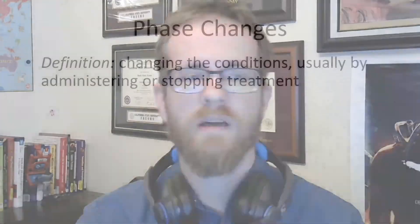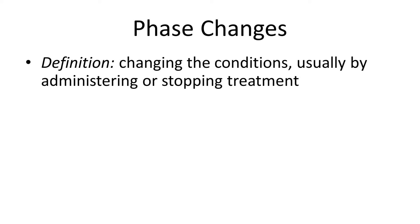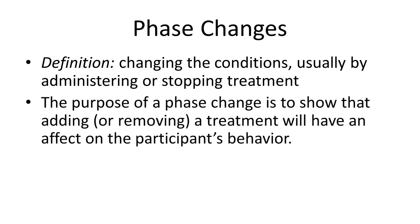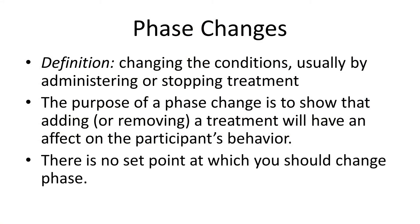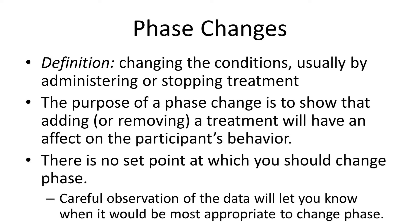You're obviously going to need to change from one phase to the next, and the way you decide when to change is based on the data. When you do a phase change, you are generally administering or stopping some treatment. The purpose of a phase change is to show that adding or removing a treatment has an effect on the participant's behavior. Careful observation of the data will let you know when it's most appropriate to change your phase.